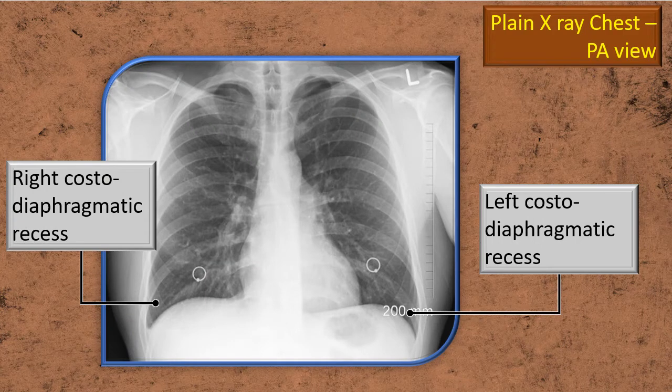Now you see the same thing in a plain X-ray — the two recesses in a normal X-ray. You can see the right and the left costo-diaphragmatic recesses. Note in particular the area is clear; the angle is very clearly seen. That means it's a normal lung.